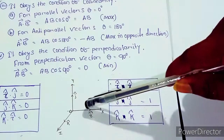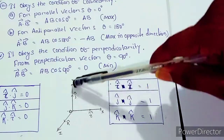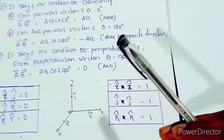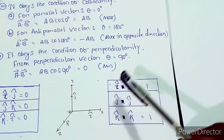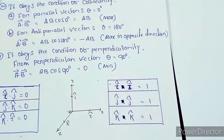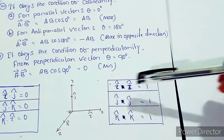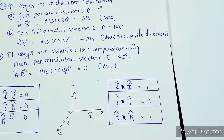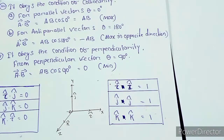For unit vectors I cap and J cap, since the magnitude is 1, I cap dot I cap equals 1 times 1 times cos 0 equals 1. Similar results apply for other unit vector dot products.